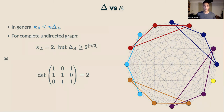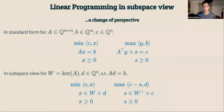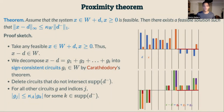What tools do we use to achieve this improvement? Like Tardos, we rely heavily on proximity theorems for the circuit imbalance measure kappa. For that, we change perspective on linear programs: instead of the standard matrix formulation, we identify the kernel of the constraint matrix A with a subspace W, giving an equivalent formulation in terms of subspaces.